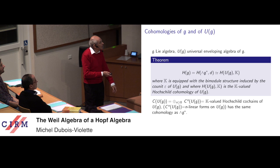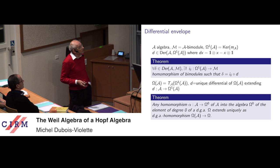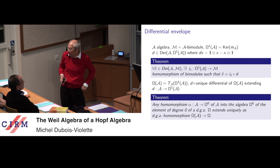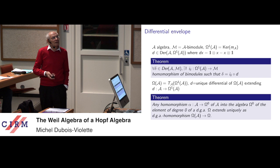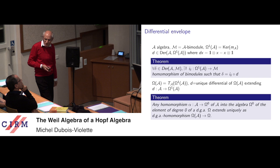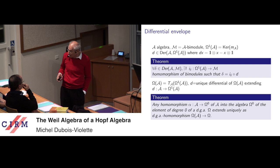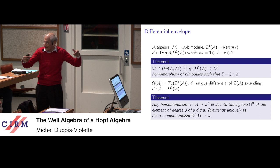Now let me remind you of the universal differential calculus over an associative algebra, which I call the differential envelope of the associative algebra. Assume that A is an algebra and M is an A-bimodule. There is a notion of derivation of A in M, which is just a linear mapping satisfying the Leibniz rule. A particular bimodule will be the kernel of the product of the associative algebra — it is a sub-bimodule of A tensor A.